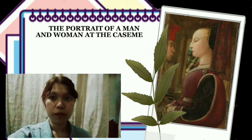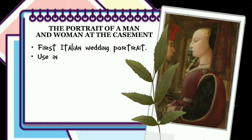The Portrait of a Man and a Woman in a Casement was the first Italian wedding portrait. This kind of portrait was used in arranged marriages for the purpose of introducing the man to his fiancée. The features of the sitter are as notable as the impossibility of the room that encases the woman. As with most later portraits, the female in a domestic interior, the box-like shape, and steeply foreshortened ceiling are plainly adopted from depictions of the Madonna and Child.